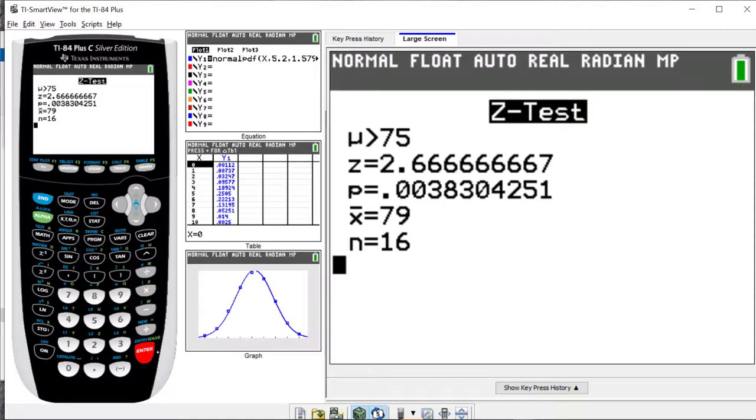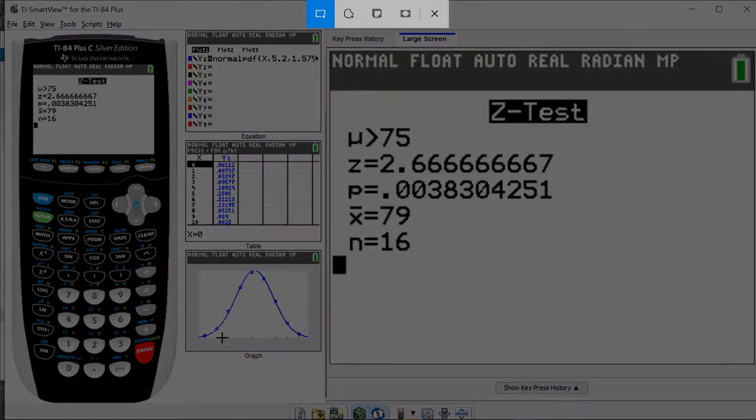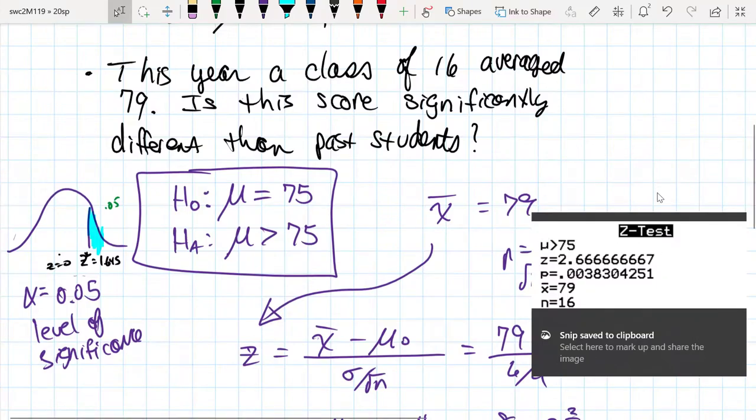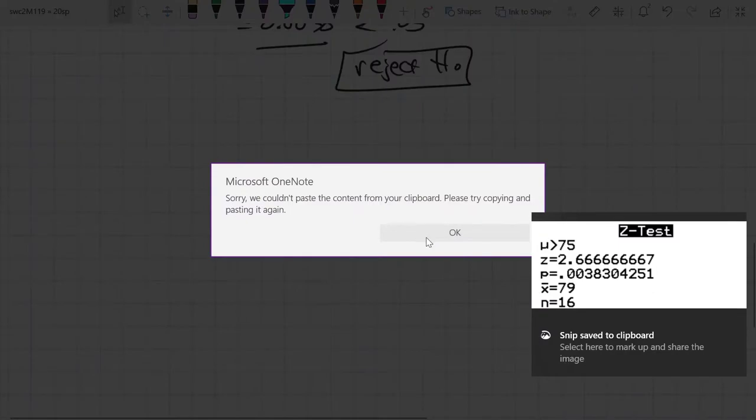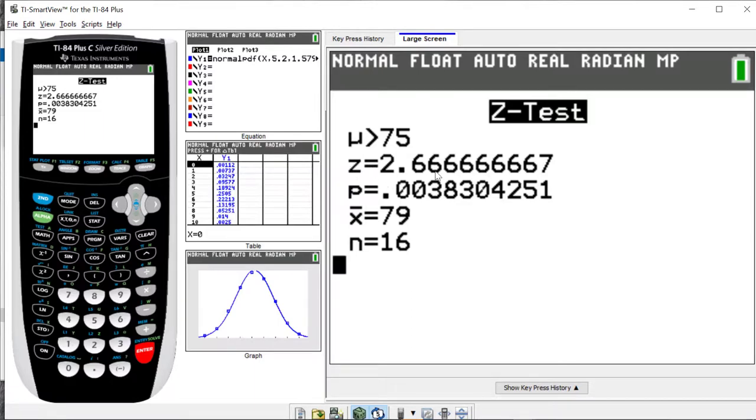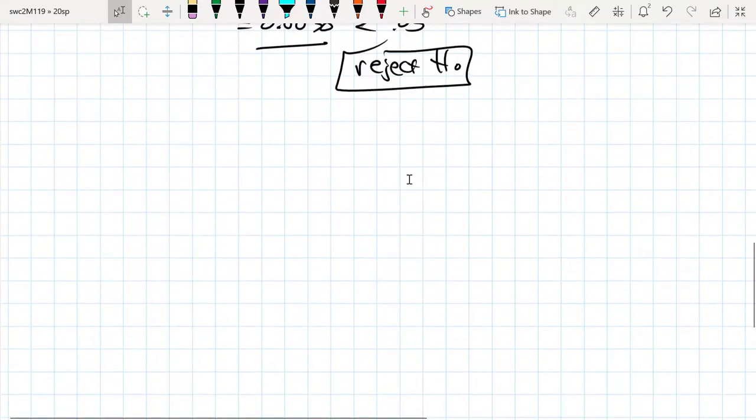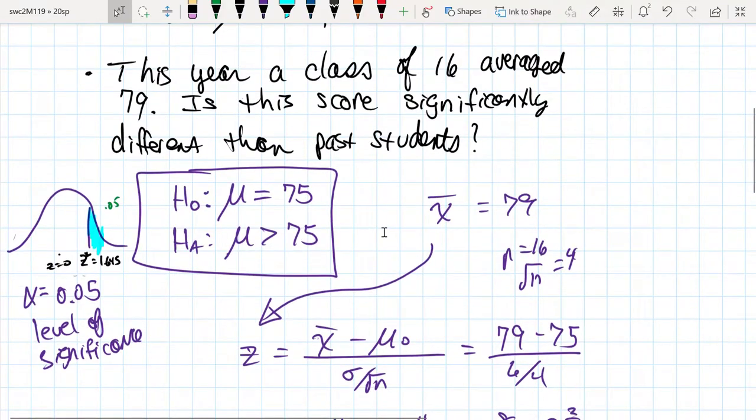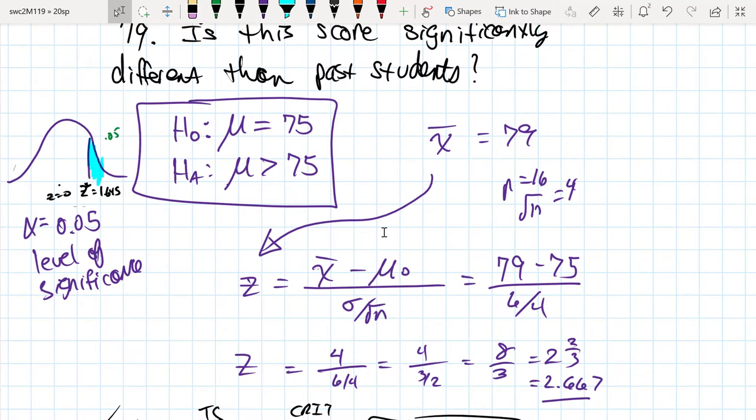Let's go ahead and hit calculate. Again, we get our 2.667. Our calculator gives us the same values. The test statistic is 2.667 and a p-value of 0.0038. We're able to do a right-tailed test using both processes, and both tell us that our result is improbable enough for us to reject the null hypothesis.